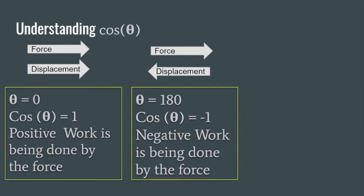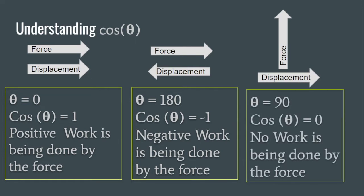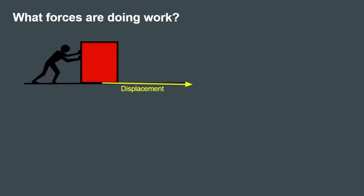If displacement points to the right and force points up, the angle between them is 90°, and cosine of 90° equals zero. Therefore, no work is being done by that force. Let's take a look at an example where we identify what forces are doing work.